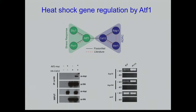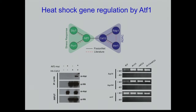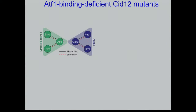We showed that deleting DICER1 relieves repression under normal conditions — gene expression increases. Deleting CID12 also increases expression, but a double deletion shows no additional increase, indicating DICER1 and CID12 work in the same pathway for this purpose. If this is the only real link between RNAi and ATF1-heat shock gene regulation, then breaking this link should separate the two pathways.